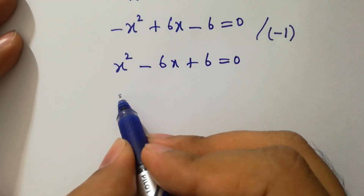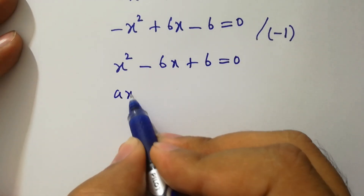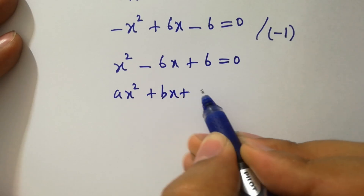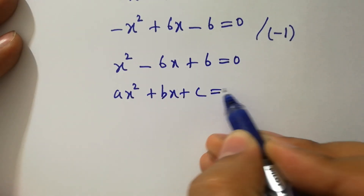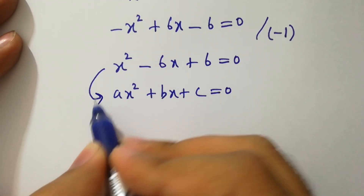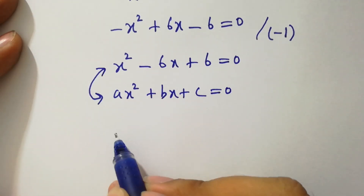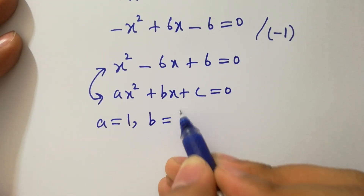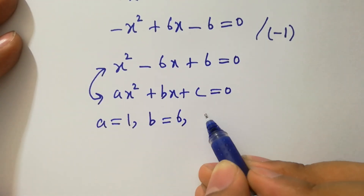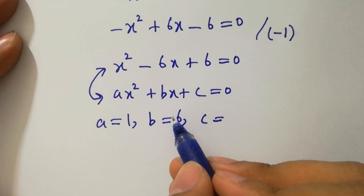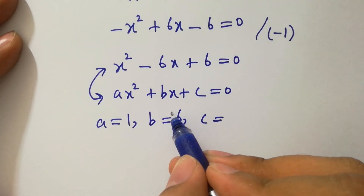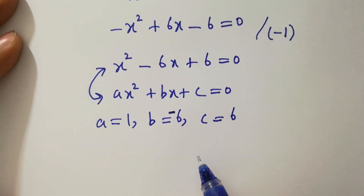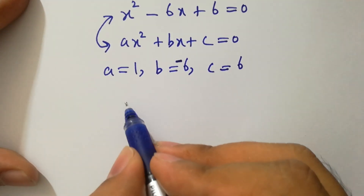This is a quadratic equation of the form ax squared plus bx plus c equal to 0. By comparing, we have a equal to 1, b equal to minus 6, and c equal to 6.